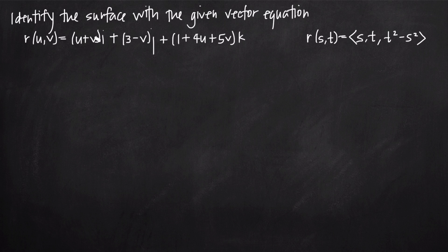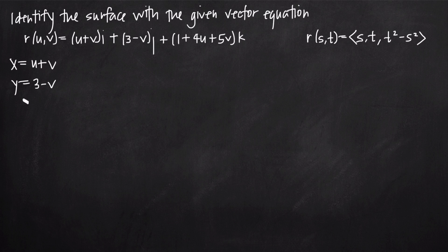The first thing we want to do with these types of problems is identify parametric equations of the surface. When we have a vector equation in the form R of u, v, we take the coefficients on our i, j, and k values. So we say that x is equal to the coefficient on our i term, x equals u plus v; y is equal to the coefficient on j, which is 3 minus v; and z is equal to the coefficient on k, which is 1 plus 4u plus 5v.